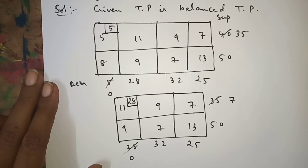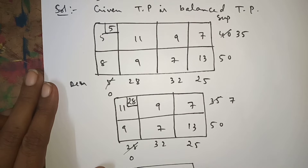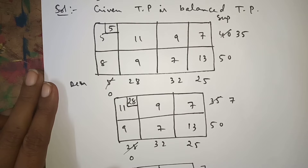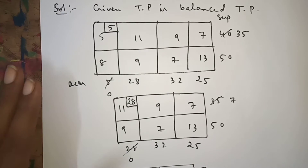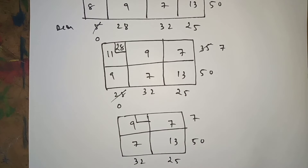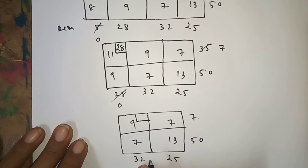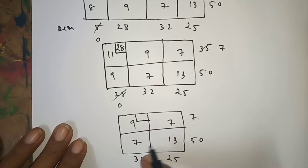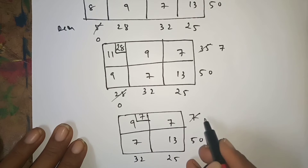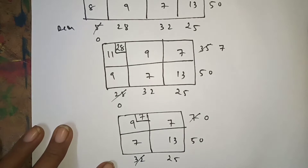Now according to this block, this is the northwest corner. The supply is 7 and the demand is 32. Out of 7 and 32, the minimum is 7. We use 7; supply becomes 0, remaining demand is 25.